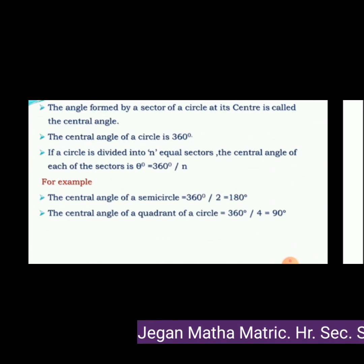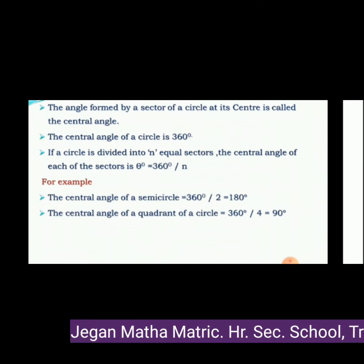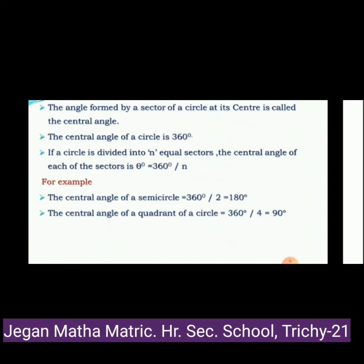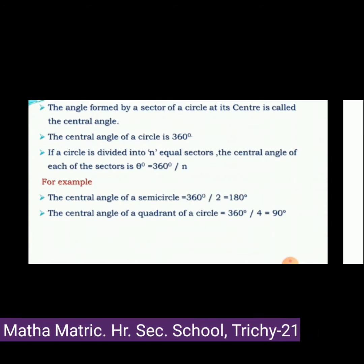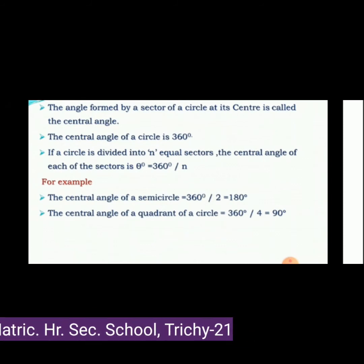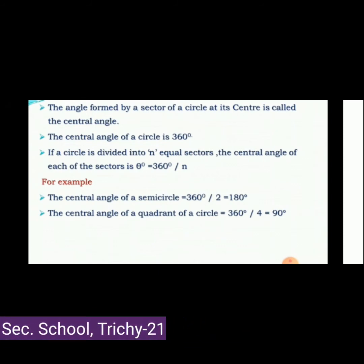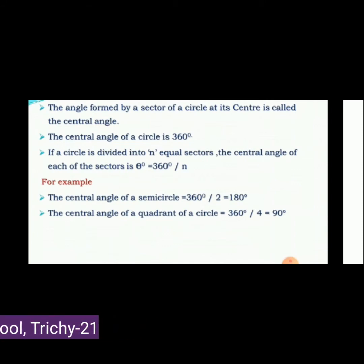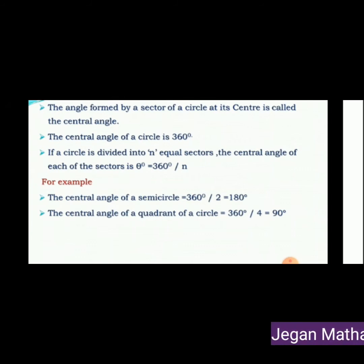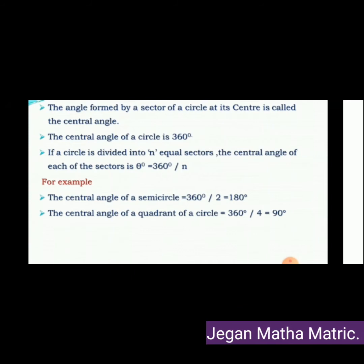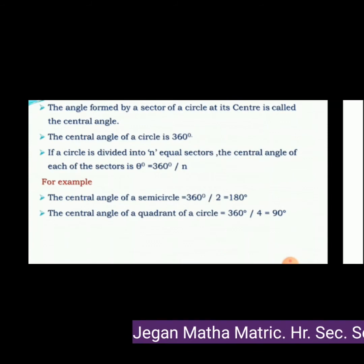If a circle is divided into n equal sectors, the central angle of each sector is theta = 360 degrees divided by n. For example, the central angle of a semicircle is 360 ÷ 2 = 180 degrees. A quadrant angle of a circle is 90 degrees, because a circle divided into 4 parts gives each part a 90 degree angle.